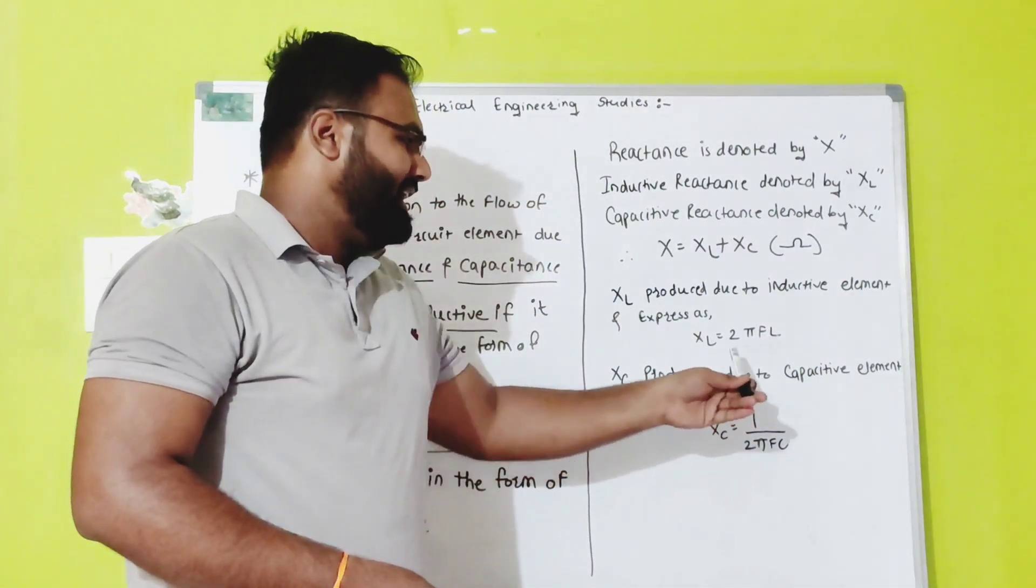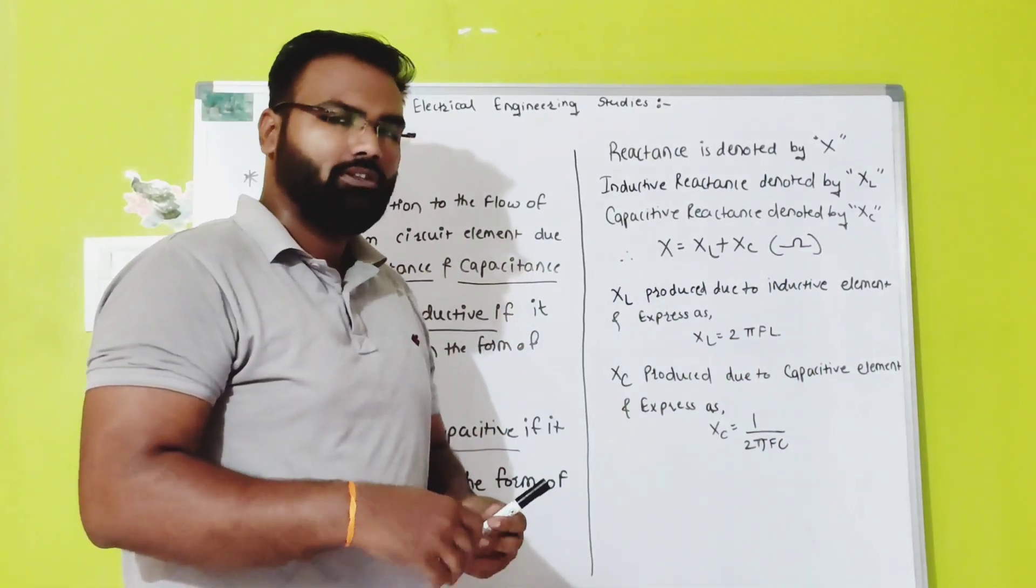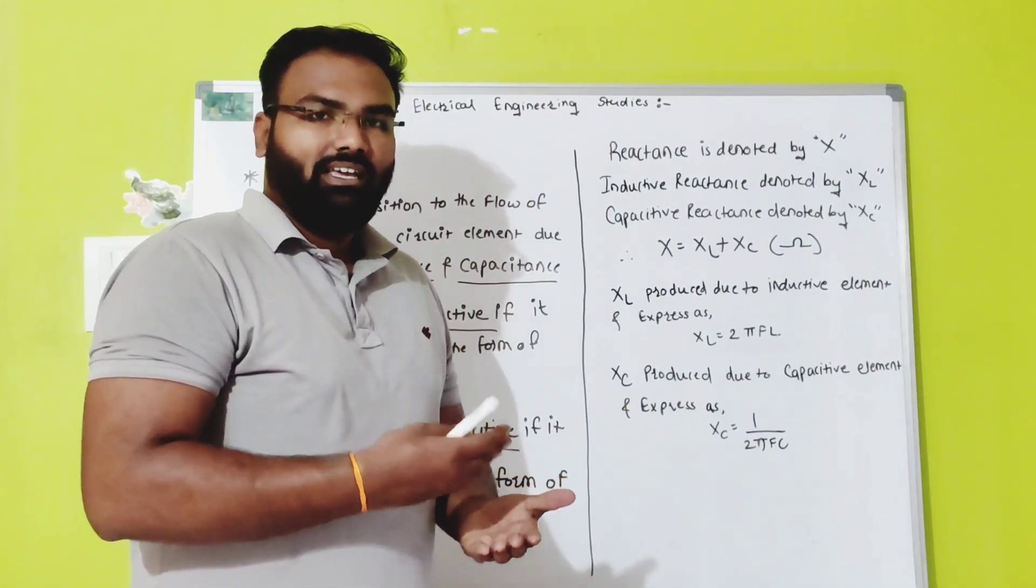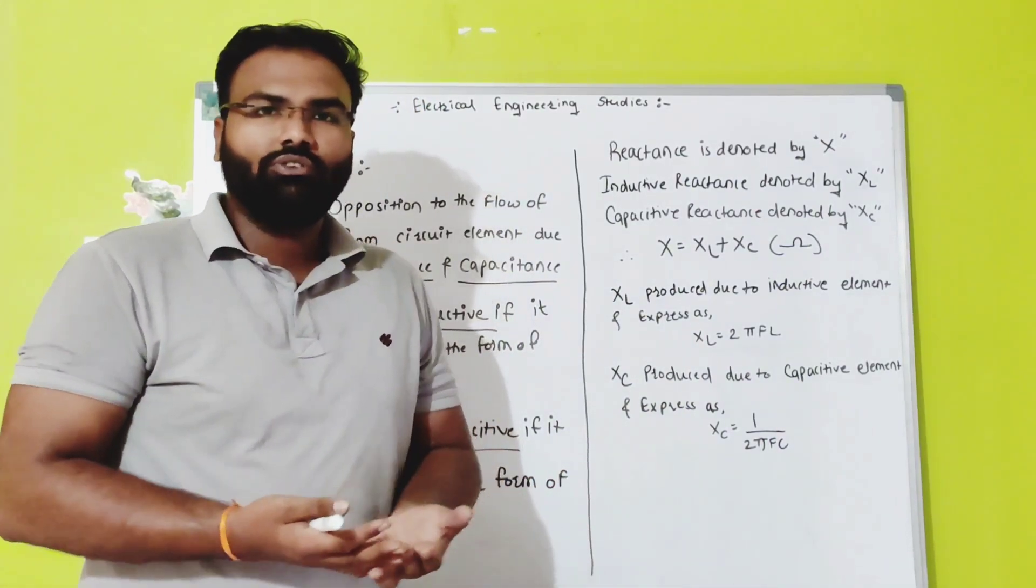And XC produced by capacitive element which is also expressed by the formula, that is XC equals 1 upon 2 pi F C, where F is the frequency and C is the value of your capacitor.